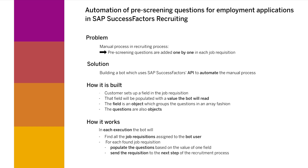In each execution, the bot will find all the job requisitions assigned to the user. Then, for each job requisition, it will populate the questions and finally send the requisition to the next step of the recruitment process. Let's go see how this works.